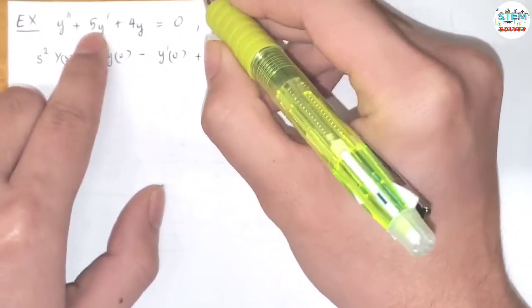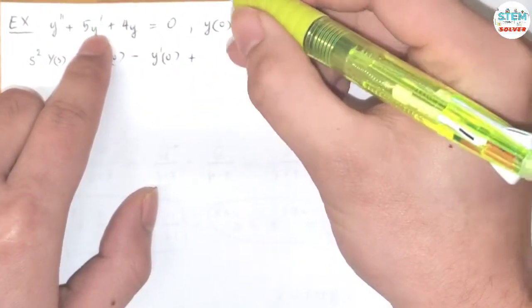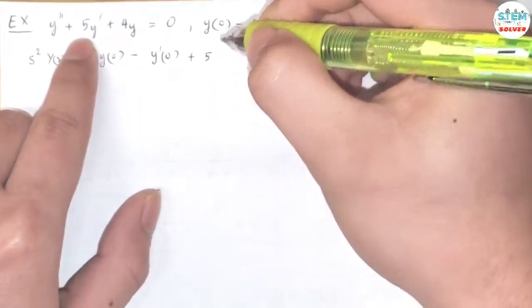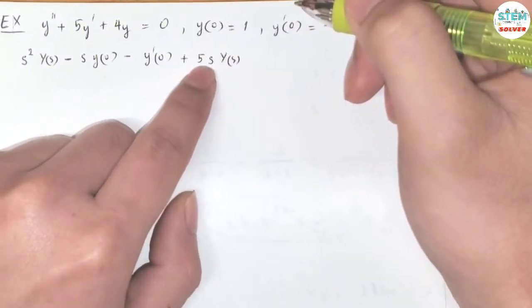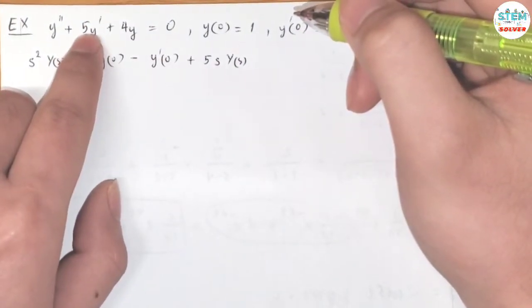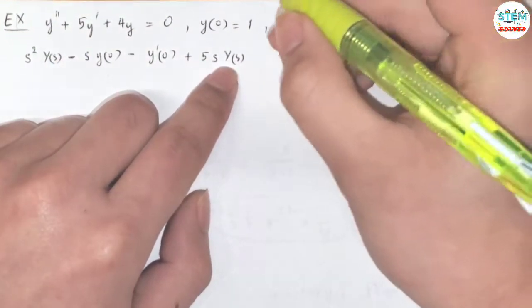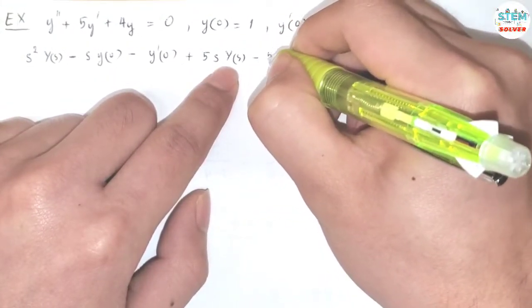Plus, we have y' - don't forget to account for the leading coefficient here. 5s¹ times capital Y(s), always start with s to the highest derivative, which is 1 in this case times capital Y(s), then subtract down minus 5y(0).